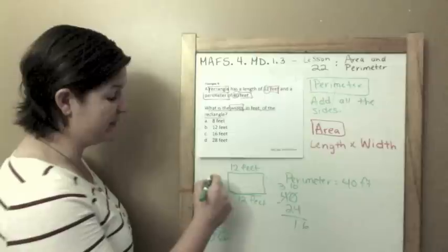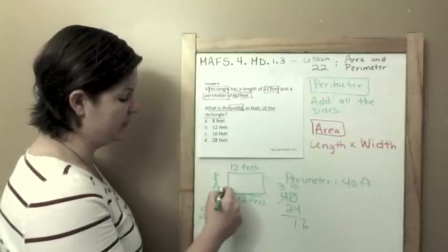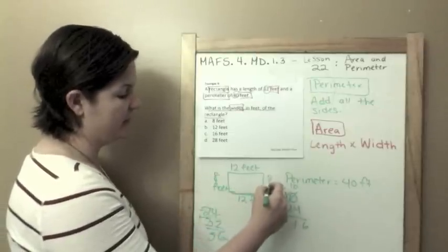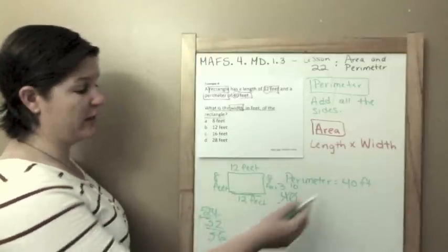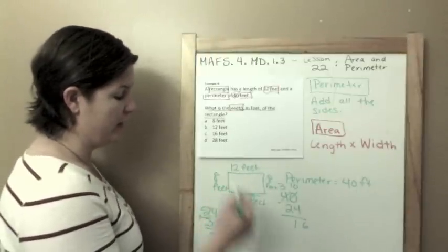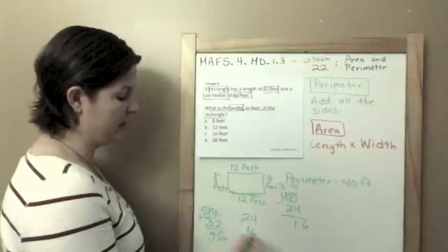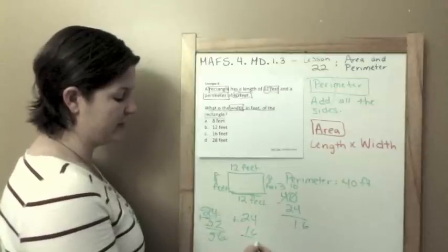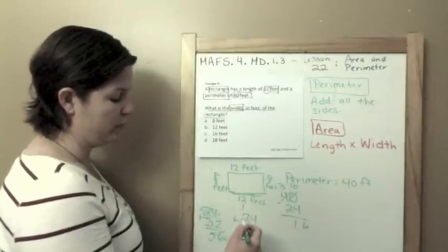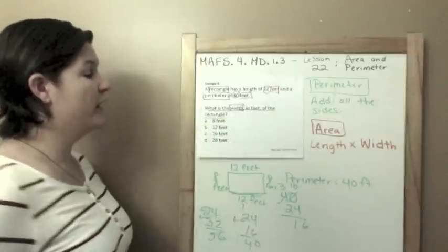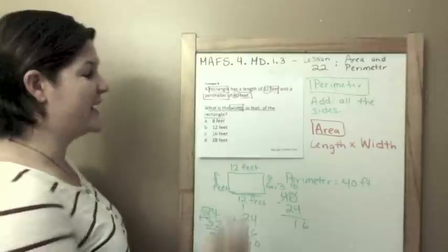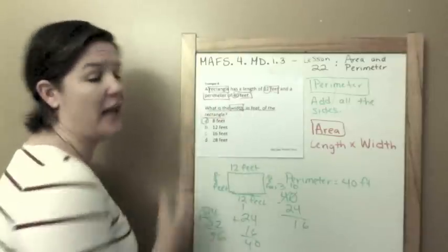8 feet plus 8 feet equals 16. And now let's check to make sure we get 40. 12 plus 12 is 24, 8 plus 8 is 16, 4 plus 6 is 10, 1 plus 2 plus 1 is 40, which is our perimeter. So what is the width? The width, just one side of the rectangle, it would be 8 feet.